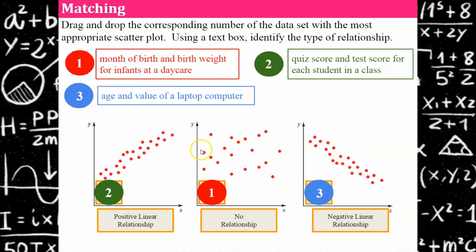The next graph is clearly no relationship. The points are just scattered all over the place. You couldn't put a line in here describing it and we can connect that to the month of birth and the birth weight for infants at a daycare. The month that you were born in throughout the year has no correlation to your weight. If you're born in January it doesn't mean you're going to weigh more or less than a baby born in June. So that would be a no relationship scatter plot.